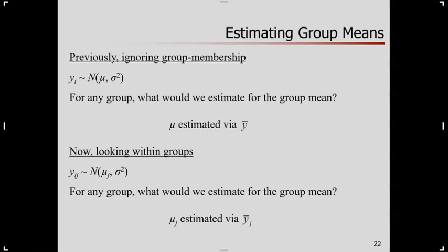Let's just contrast things slightly. A few moments ago, we said forget about group membership. Just treat everybody as all at once. We had a model that says the outcome variable is normal with mean mu and variance sigma squared. What would we estimate for any group as the group average? Well, the mean. And I would estimate that for my data based on the overall sample mean of all the scores.